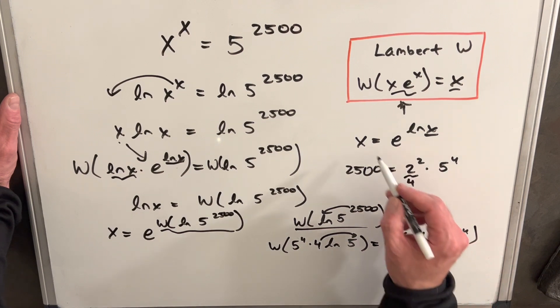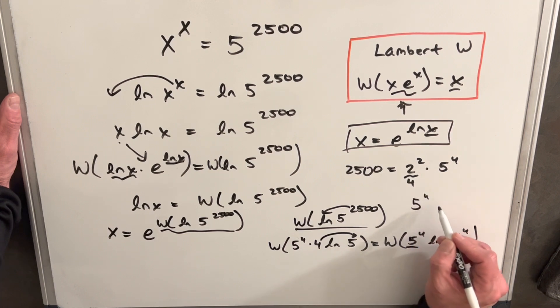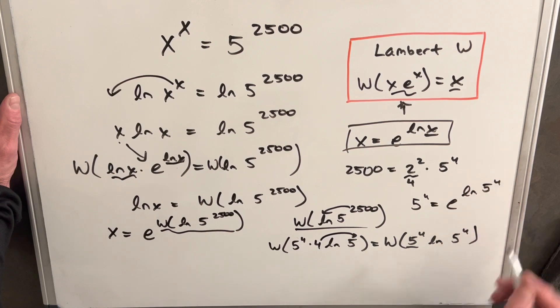And then we can go back the same trick we used here on x. We can use it on 5 to the 4th. So we can write 5 to the 4th as e to the ln 5 to the 4th.